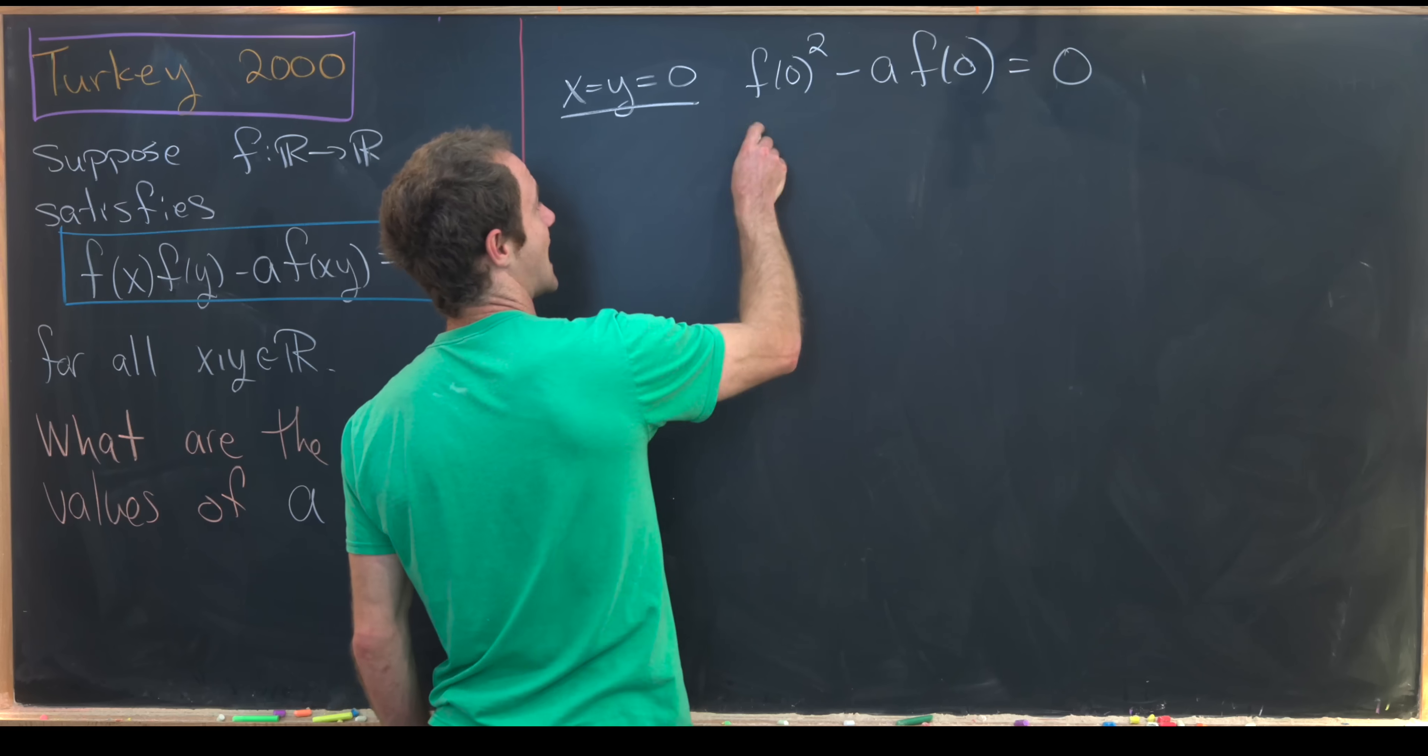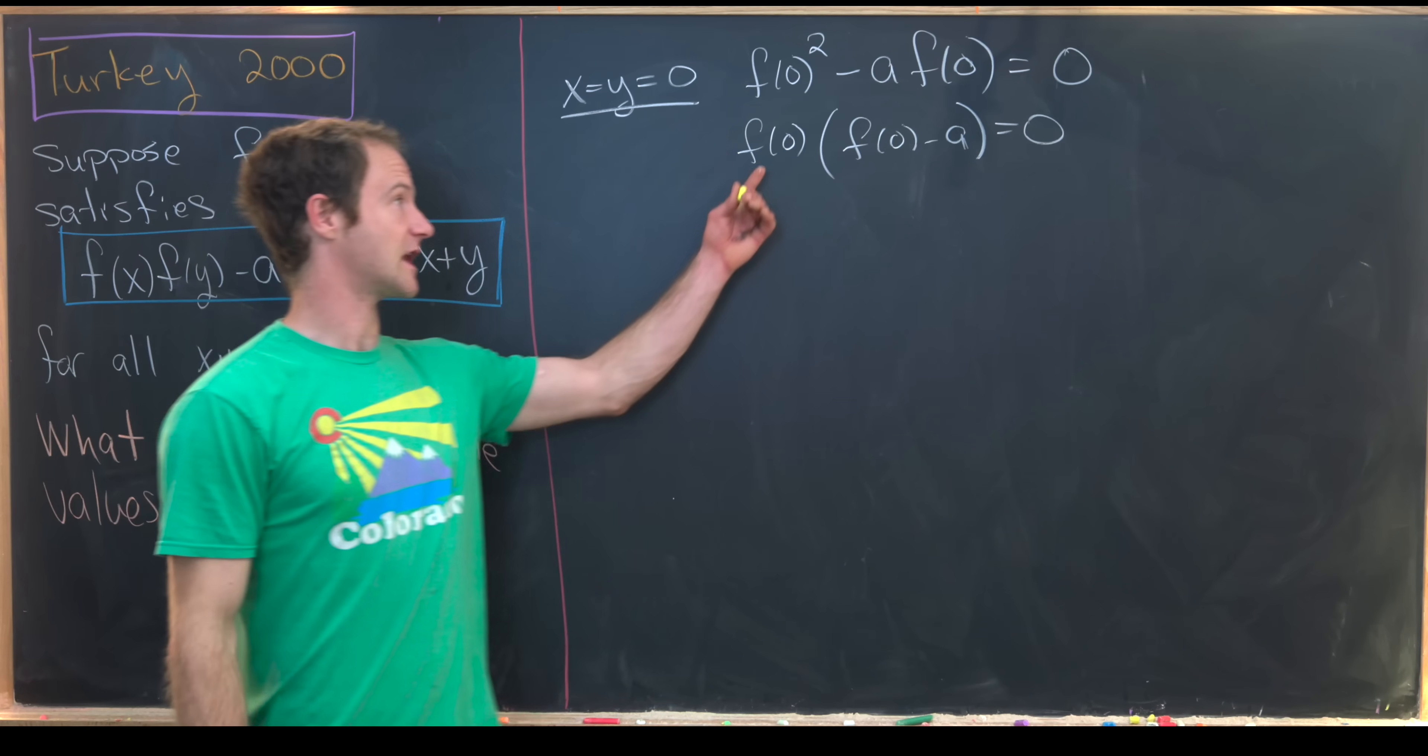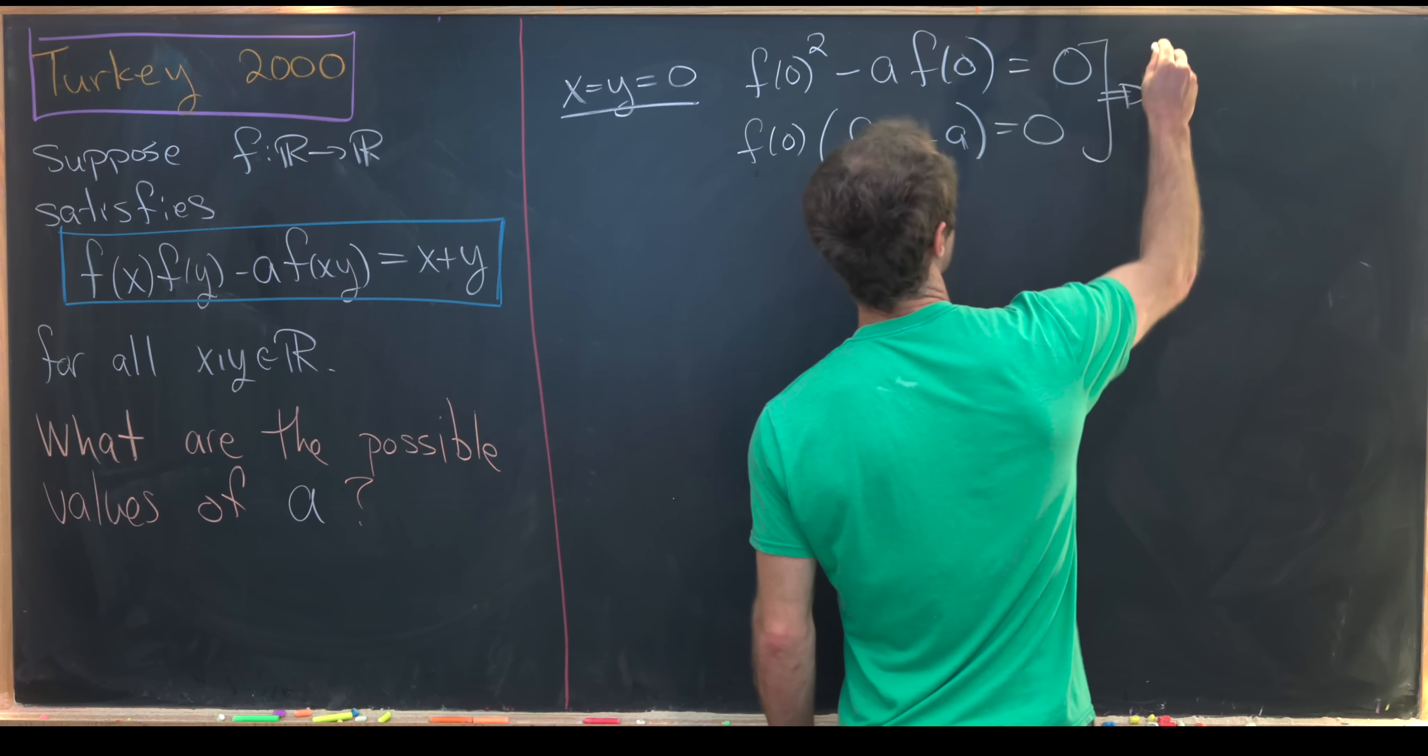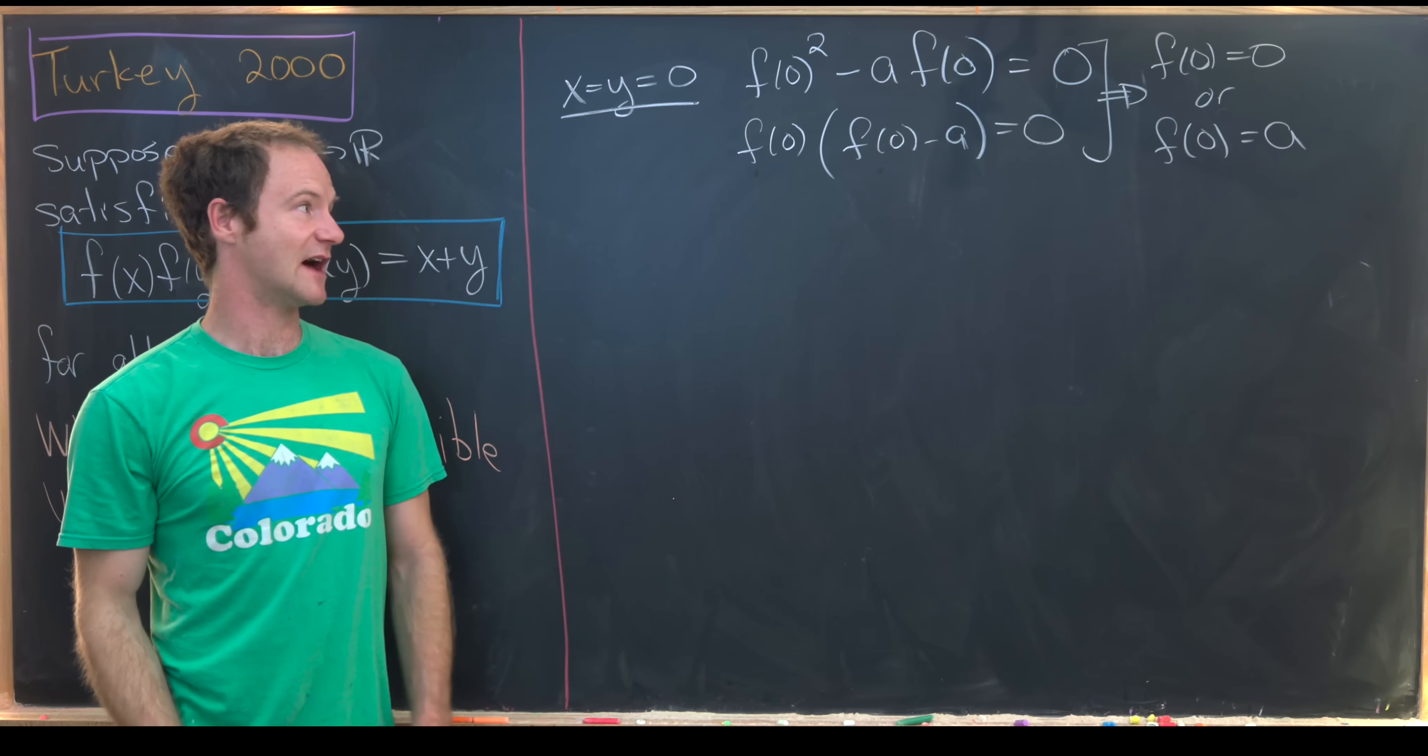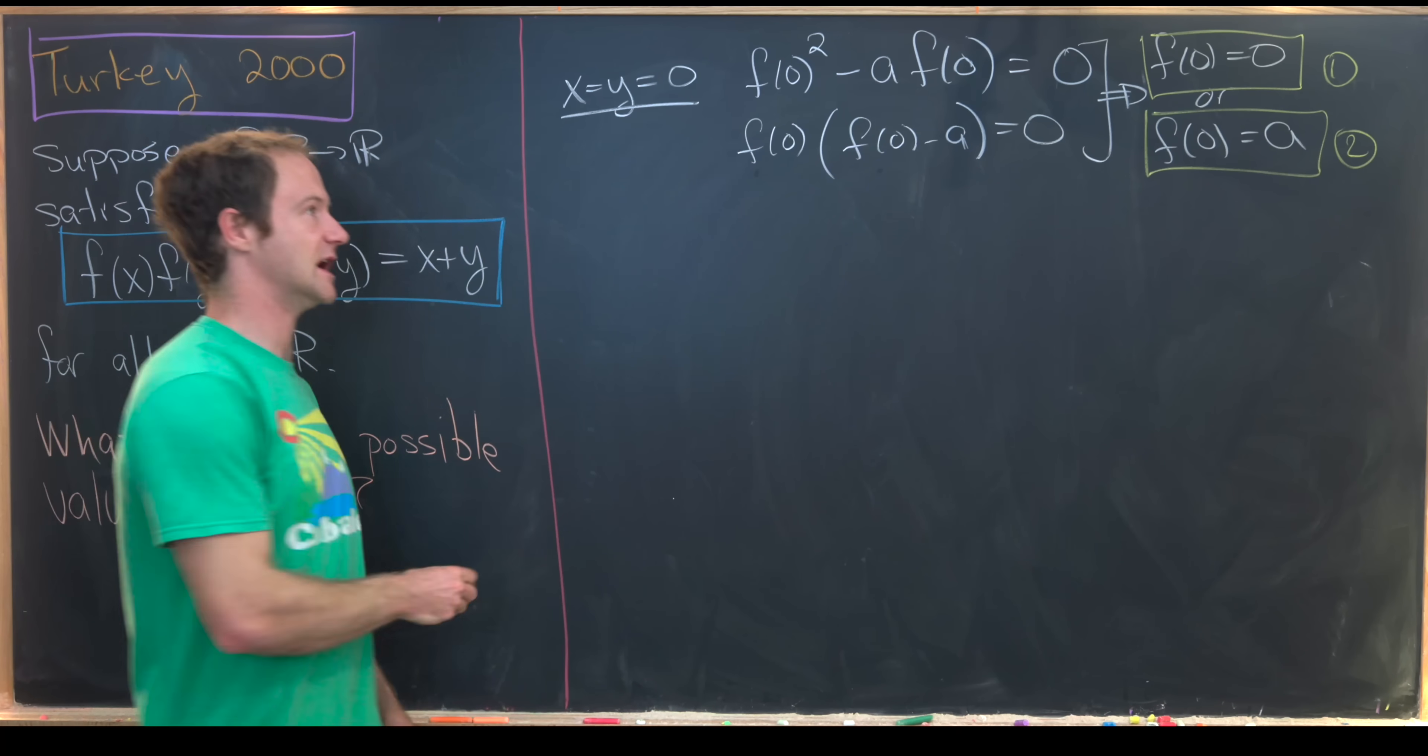Now notice we can factor an f(0) out of this, and we get f(0)(f(0) - a). But by a kind of an obvious property of the real numbers, if you've got a product of two numbers equals zero, that means one of them must be zero. So that means f(0) equals zero, or f(0) - a is equal to zero, or in other words, f(0) equals a. So that's going to build these two cases, which I will number one and two and square in yellow over there.